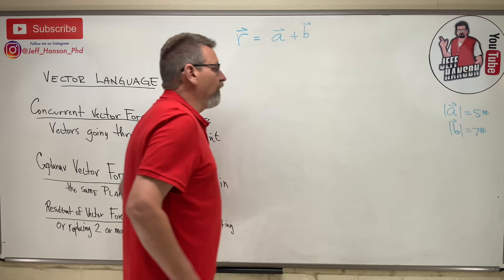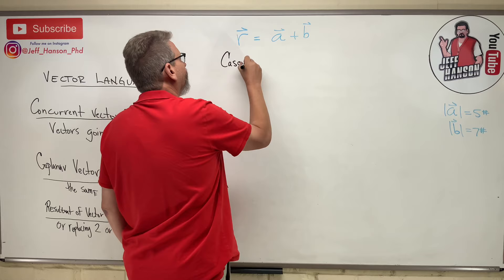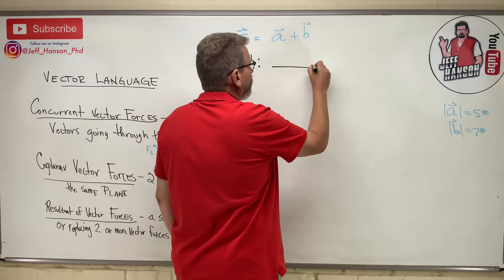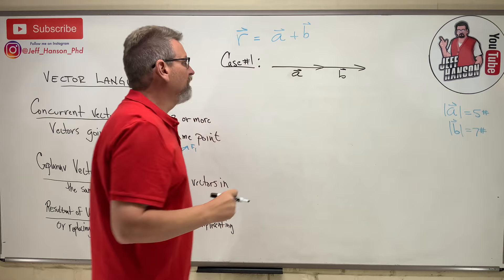So I've got those two vectors. I want to add them together. Here's the different kind of cases that we might see. Case number one. You've got this vector A, vector B. There's, oh, I said it backwards, didn't I? There's vector B. This is vector A.